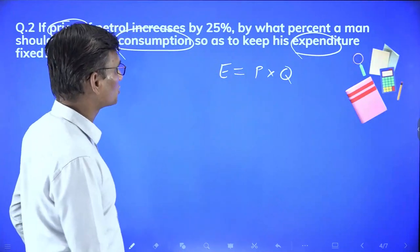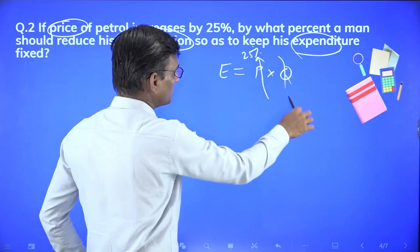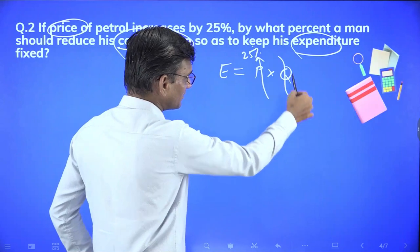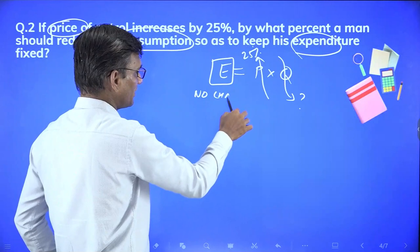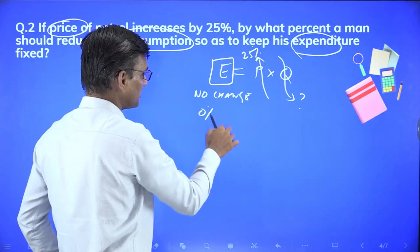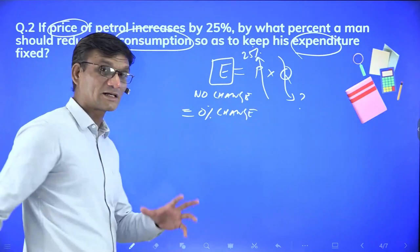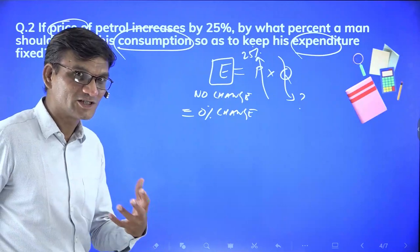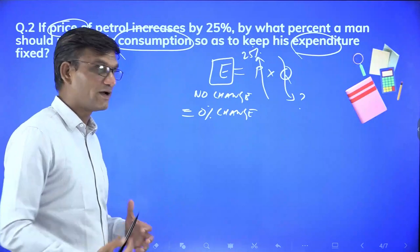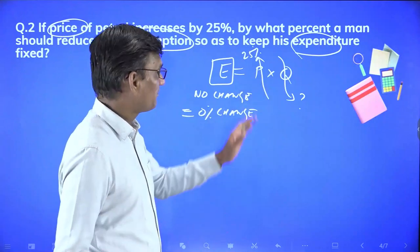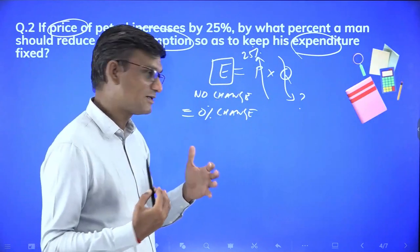Just like area equals L times B, expenditure equals price of petrol multiplied by consumption or quantity purchased. So consumption times price of petrol gives expenditure. The question says if price is increasing by 25%, by what percentage should we reduce consumption so that expenditure doesn't change?